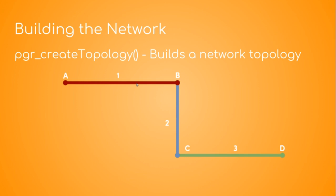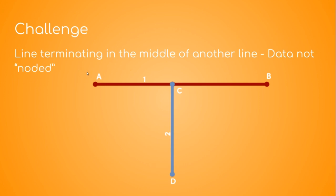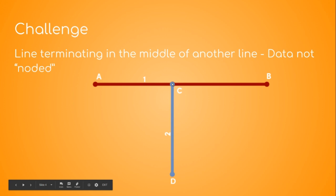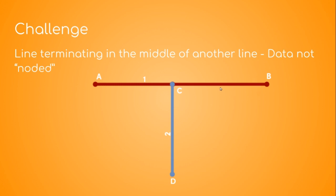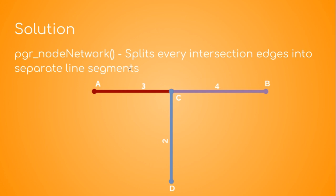This means we'll have to edit our table to add two columns — source and target — so we can accommodate the output from the create_topology function. However, we'll face a challenge: take an example where a line terminates in the middle of another line. Say our road is A-B as one segment, and then there's another segment C-D joining at the center — like a junction. This might cause our data not to be nodded correctly, with no proper connection. To fix a problem like this there's another function from pgRouting called pgr_nodeNetwork.